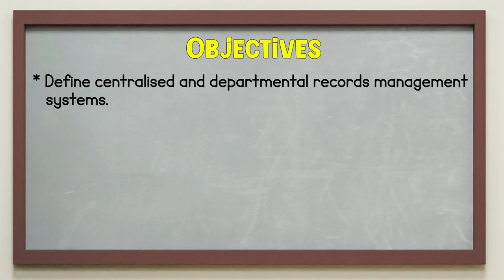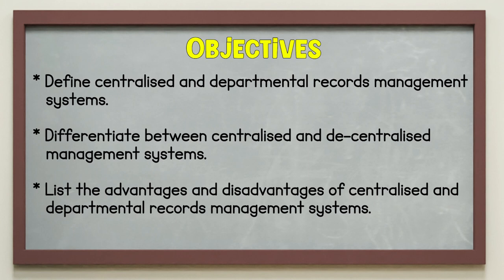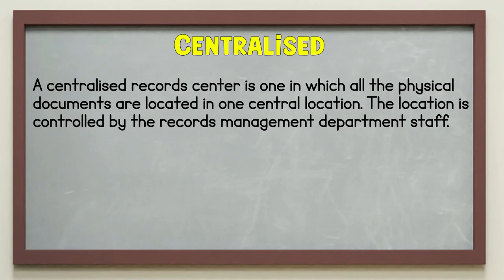Our objectives for today are to define centralized and decentralized record management and to differentiate between centralized and decentralized record management systems. At the end of the lesson, you should be able to define centralized and departmental record management systems, differentiate between centralized and decentralized management systems, and list the advantages and disadvantages concerning centralized and departmental record management systems.